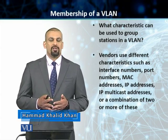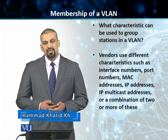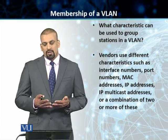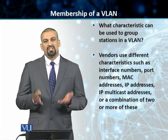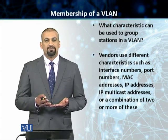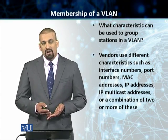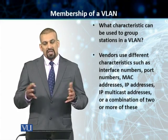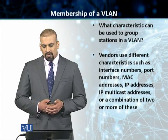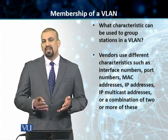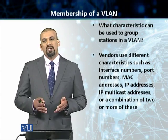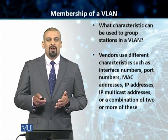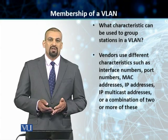There can be multiple criteria or a combination of criteria. For example, we can have interface numbers — different users with different interface numbers can be part of one single VLAN. We can have port numbers, link layer addresses or MAC addresses, and IP addresses. A particular IP address from a particular subnet can be combined together in one single VLAN. We can also have VLANs based on IP multicast addresses or a combination of any of these. It completely depends on your system administrator and your company's IT policy as to how you define the membership of that particular virtual LAN.